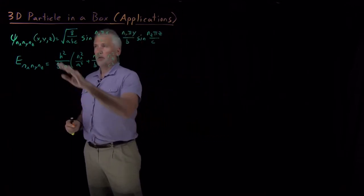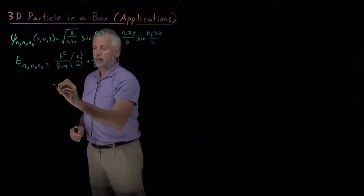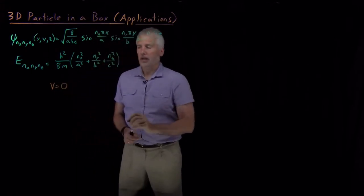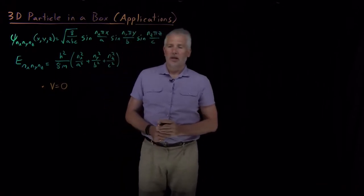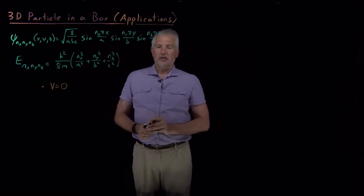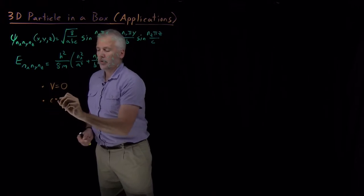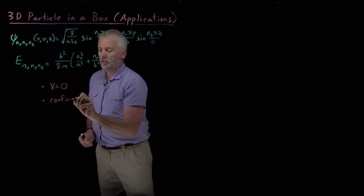We can ask ourselves what problems the 3D particle-in-a-box can help us with. And remembering the assumptions that we've made in deriving the particle-in-a-box model, we assume that the potential energy is zero inside the box and that the particle is confined to that box.